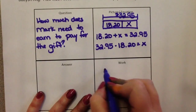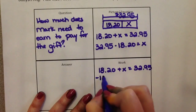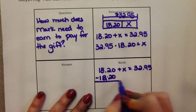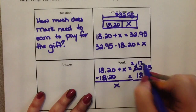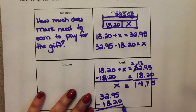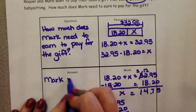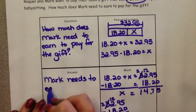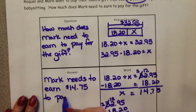Then we come down here and do the work: $18.20 plus x equals $32.95. Subtract $18.20 from both sides and x equals $14.75. And again, absolutely, you can just take $32.95 minus $18.20. Then over here you write out the answer: Mark needs to earn $14.75 to pay for the gift.